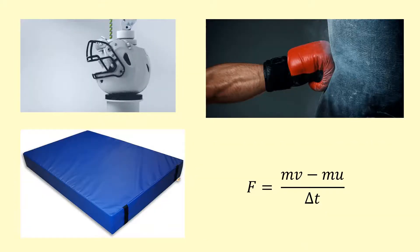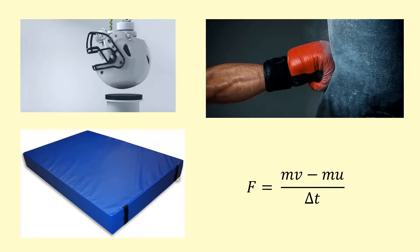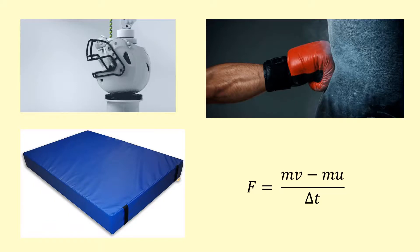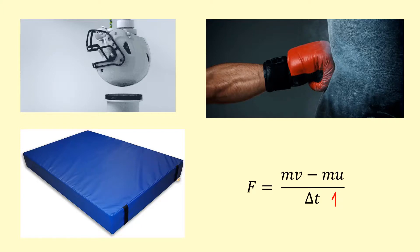Lots of safety features use this, for example, helmets, they change shape when there's a collision, your gloves change shape, crash mats like this change shape, they all increase the time taken for the change in momentum, and therefore reduce the rate of change in momentum and the force.